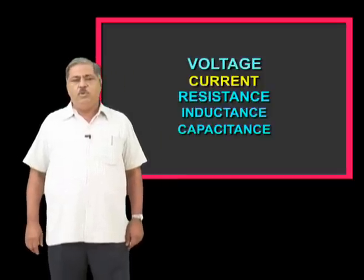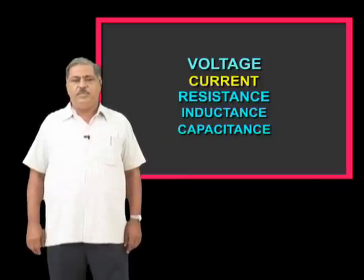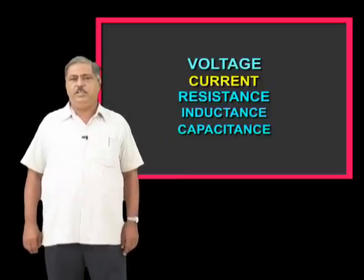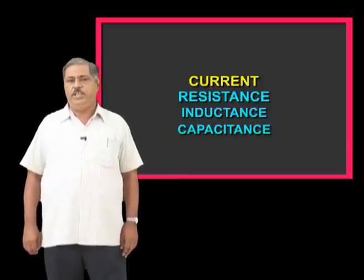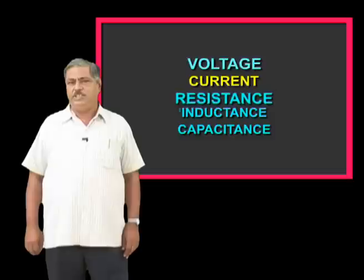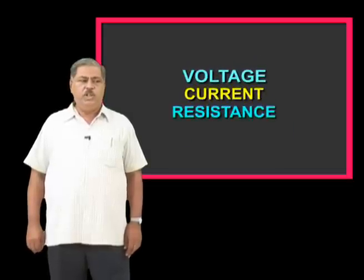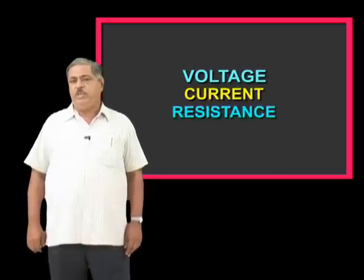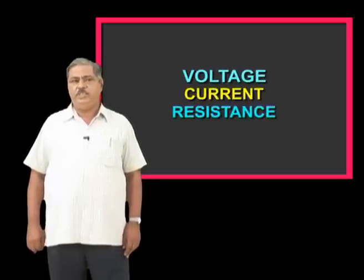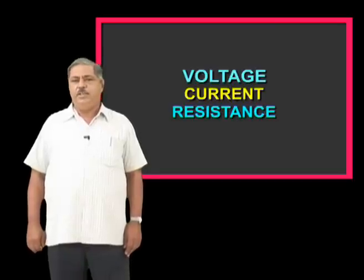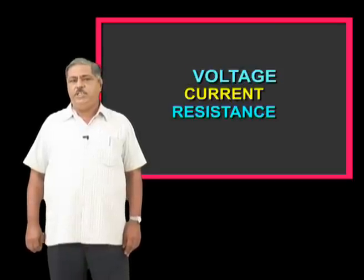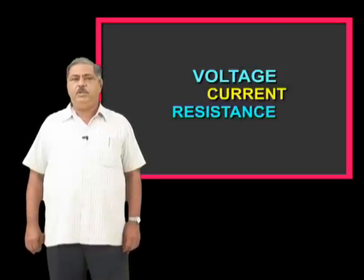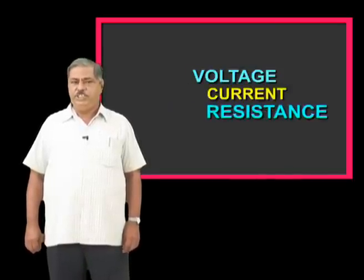The main things covered in the last class were Current, Voltage, and Resistance. The main things are Voltage, Current, and Resistance.